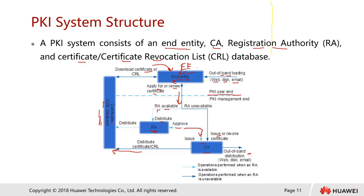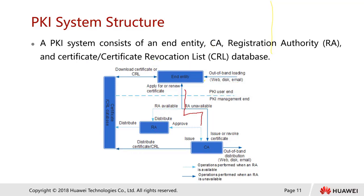Another situation requiring revocation is when the EE loses its private key. Losing a private key is serious — the only way to prevent misuse is to regenerate a new one and apply for a new certificate. The old certificate must be revoked through the revocation process. In many cases, the request process goes directly to the CA without going through the RA, as RA is not always required.